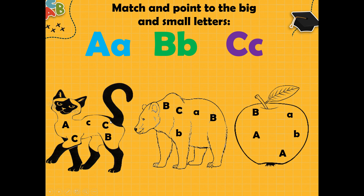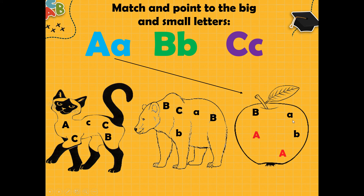Now we have three letters and three pictures. We must match and point to the big and small letters. What picture starts from letter A? Let's check. Yes, apple starts from A. Now we must find small and big A here. Big A — yes, it is big A. This one — yes, big A. This one — yes, it is small a. What about this? No, it is B, big B. What about letter B? What picture starts from B? Let's check. Yes, bear starts from letter B.